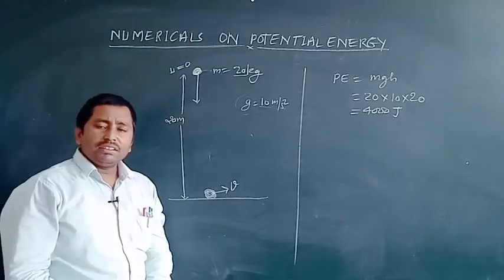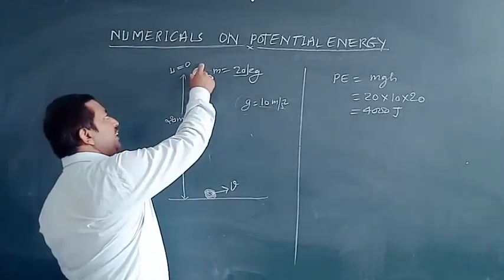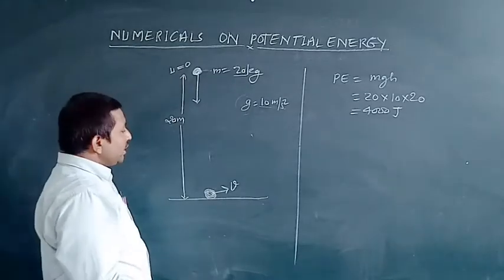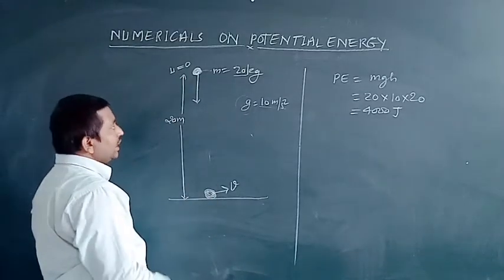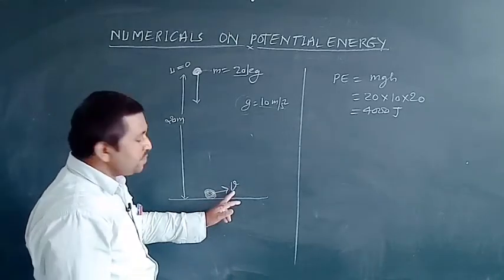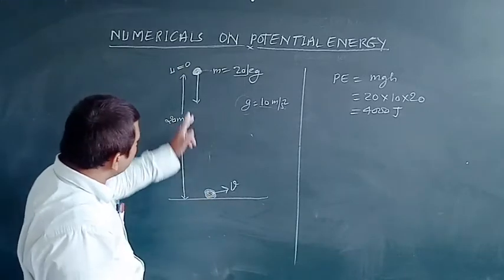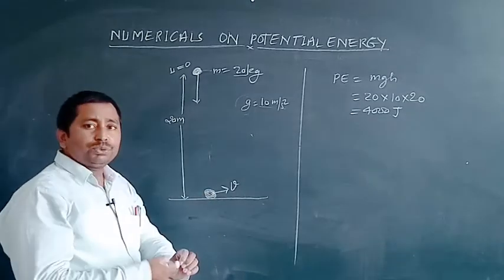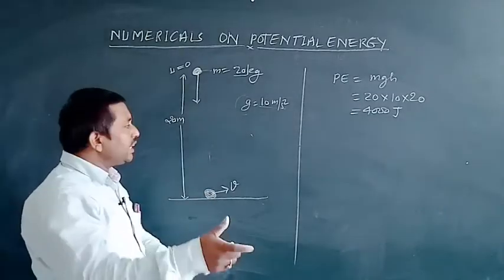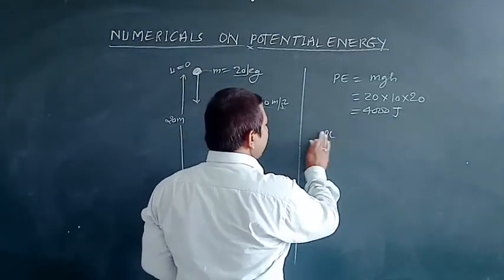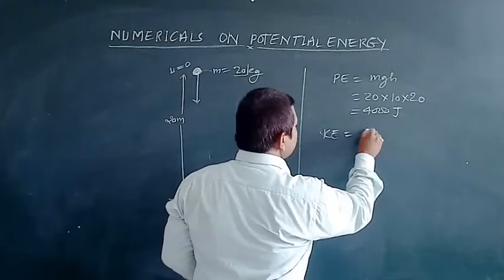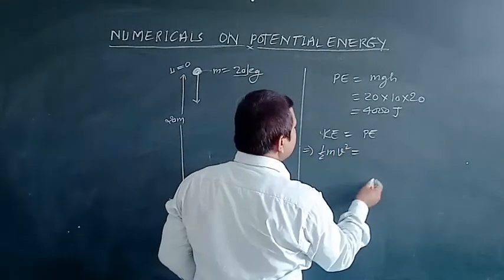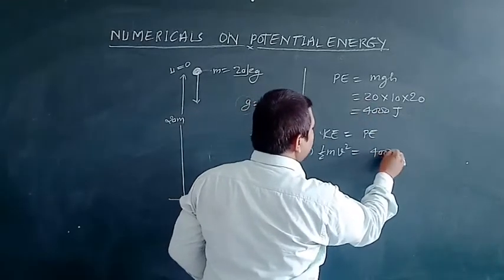As the object is released from this height, the initial velocity of the object is 0. When the body touches the ground surface, the velocity possessed by the object is V. The total energy at the surface of the ground becomes kinetic — the potential energy is converted to kinetic energy. So at the ground position, the kinetic energy equals the potential energy.